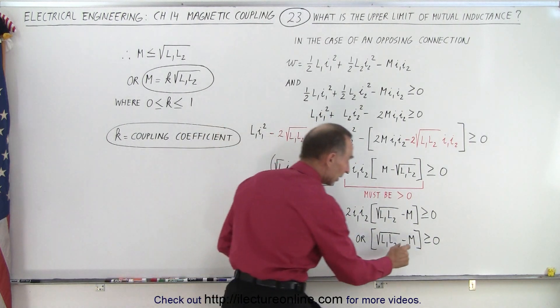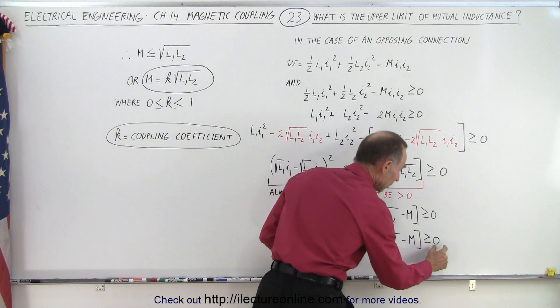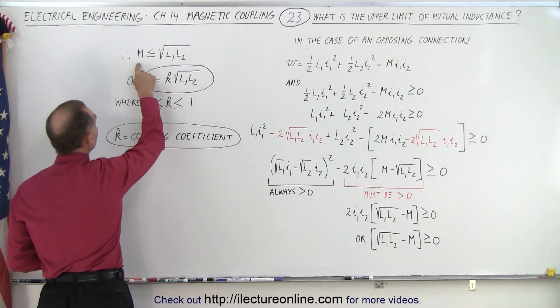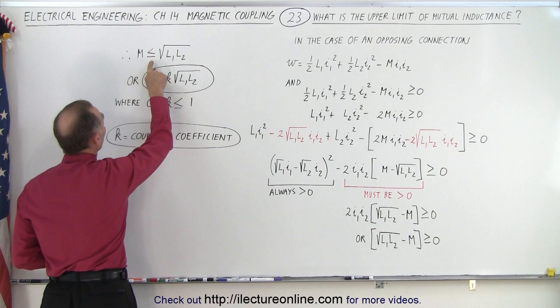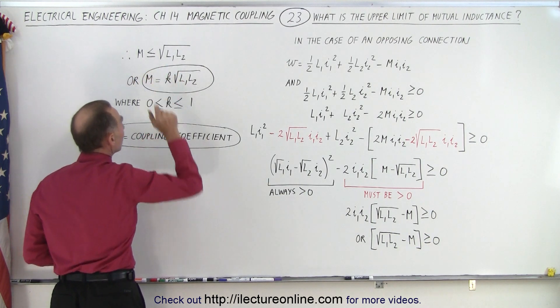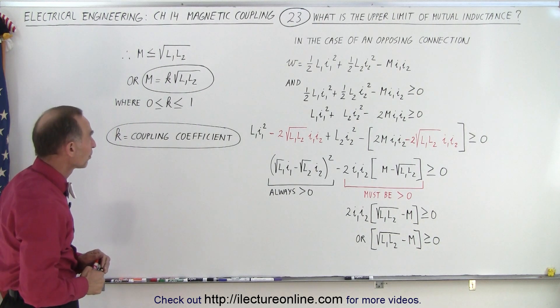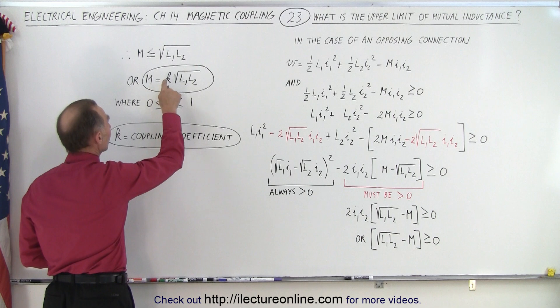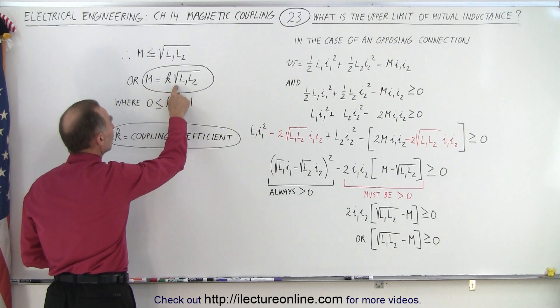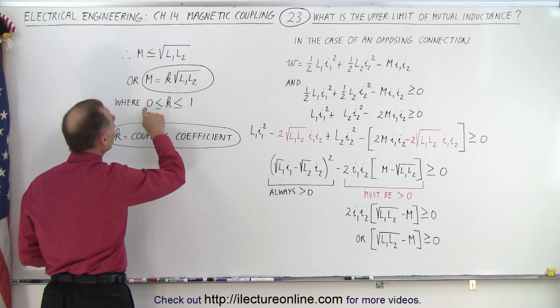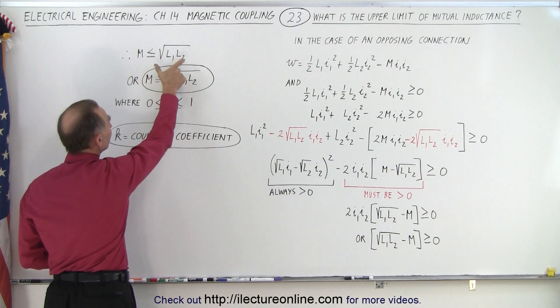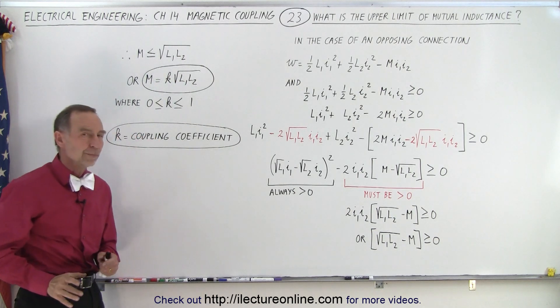And then when we take the magnetic coupling and move to the other side it will now look like this. The magnetic coupling must be smaller than or equal to the square root of the product of L₁ and L₂, or we can write as an equal sign by writing M is equal to some constant times the square root of L₁ and L₂, and that constant will be some value between zero and one if M is to be smaller than or equal to the square root of L₁ times L₂.